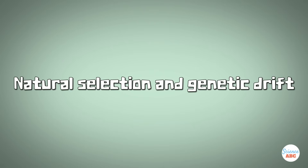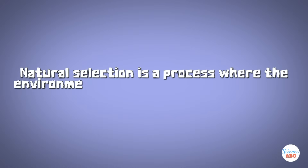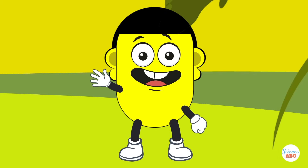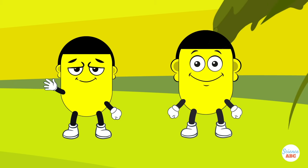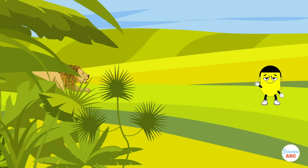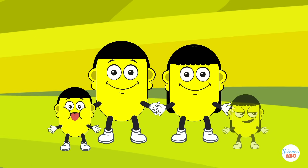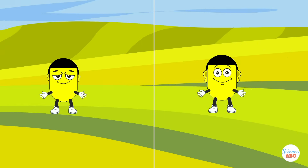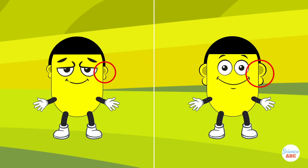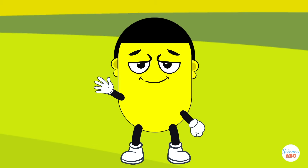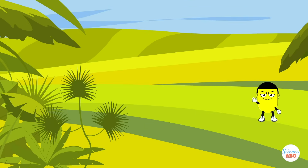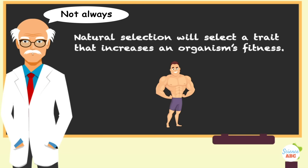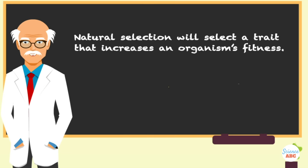Natural selection is a process where the environment selects traits that allow the individual or group to survive best. Consider a hypothetical organism that gets a mutation giving it heightened hearing. This better hearing allows it to detect and flee from predators faster, so it lives longer. It passes this better hearing to its offspring, who also survive longer than organisms that don't hear as well. Soon, there are many better-hearing individuals in the group — this better hearing was selected for. On the other hand, if an individual can't hear as well, it is less likely to survive long enough to reproduce and pass those genes to its offspring. Natural selection will select a trait that increases an organism's fitness — here, fitness doesn't mean strength; it means anything that will aid the animal in survival and reproduction.